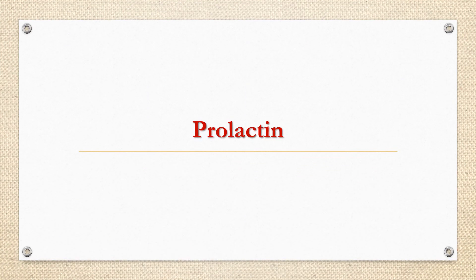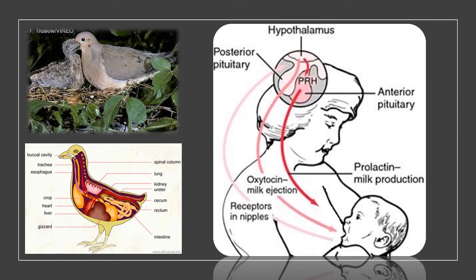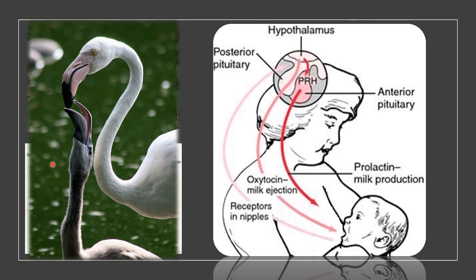Prolactin is a 199 amino acid single chain peptide, chemically similar to growth hormone but obviously not in function. Prolactin was originally described as the hormone causing secretion of milk from the crop gland of the pigeon, and later found to be the same hormone of milk secretion from mammary glands in human beings. After delivery of a child, prolactin from anterior pituitary is involved in synthesis of milk, while oxytocin from posterior pituitary is responsible for milk ejection. Whenever there is suckling by an infant, receptors in the nipple are stimulated, which sends signals to the hypothalamus; then oxytocin is released from posterior pituitary for milk ejection and prolactin is released from anterior pituitary for further milk production.